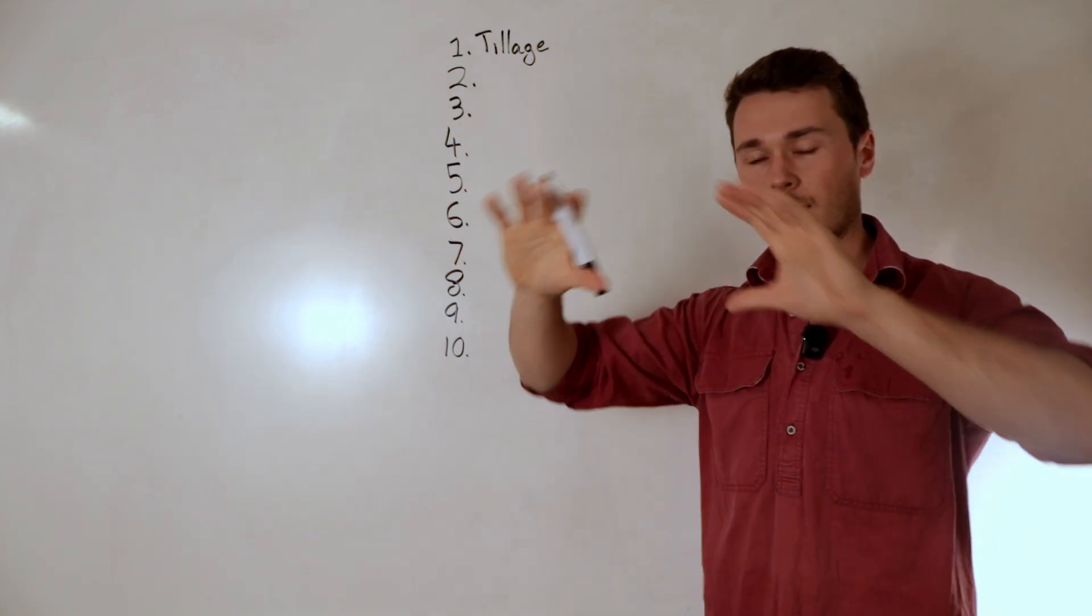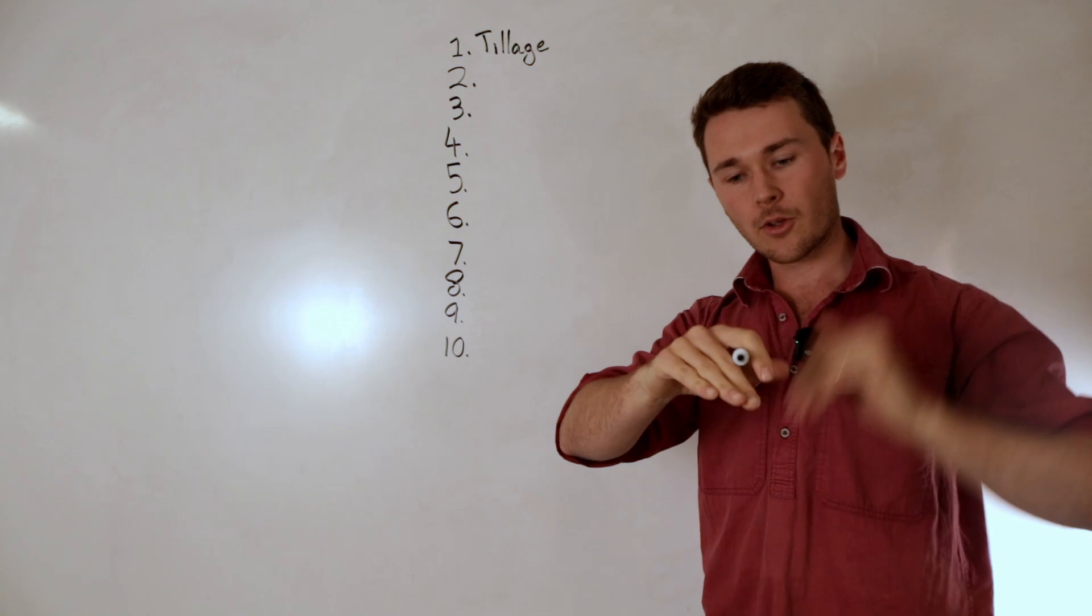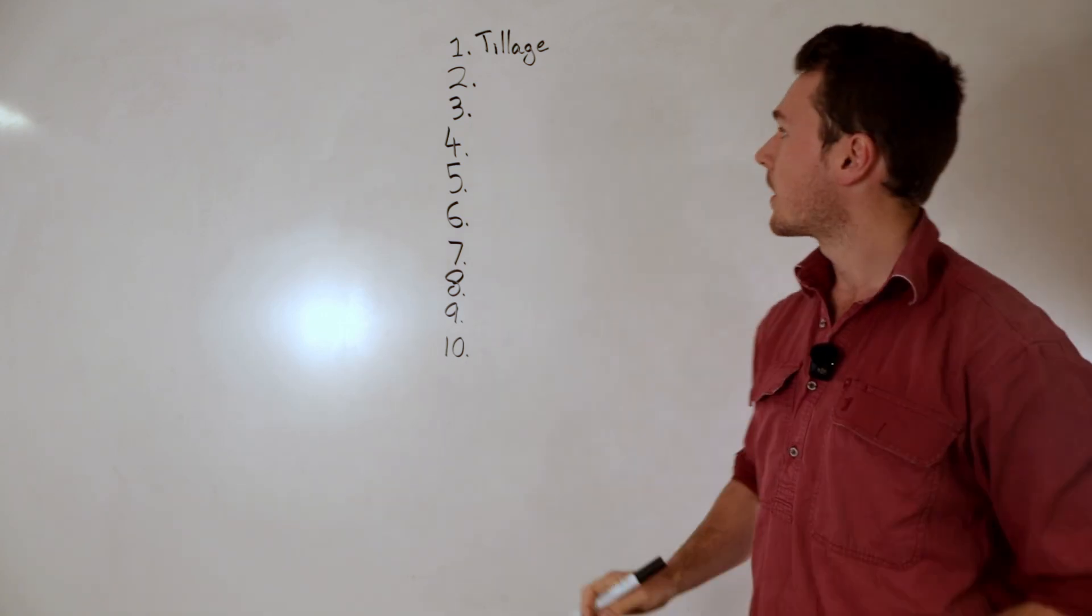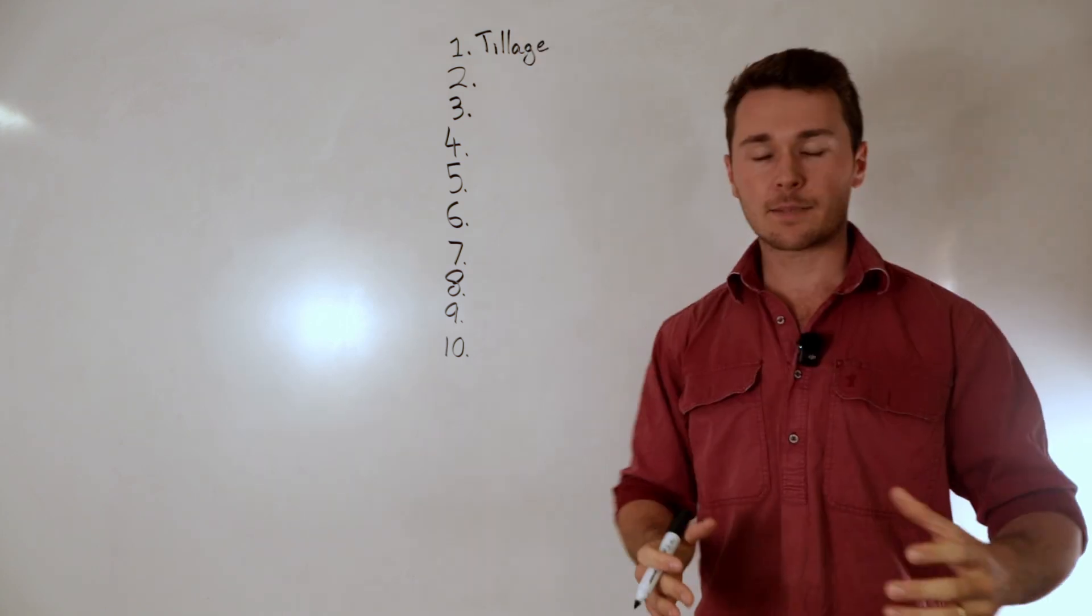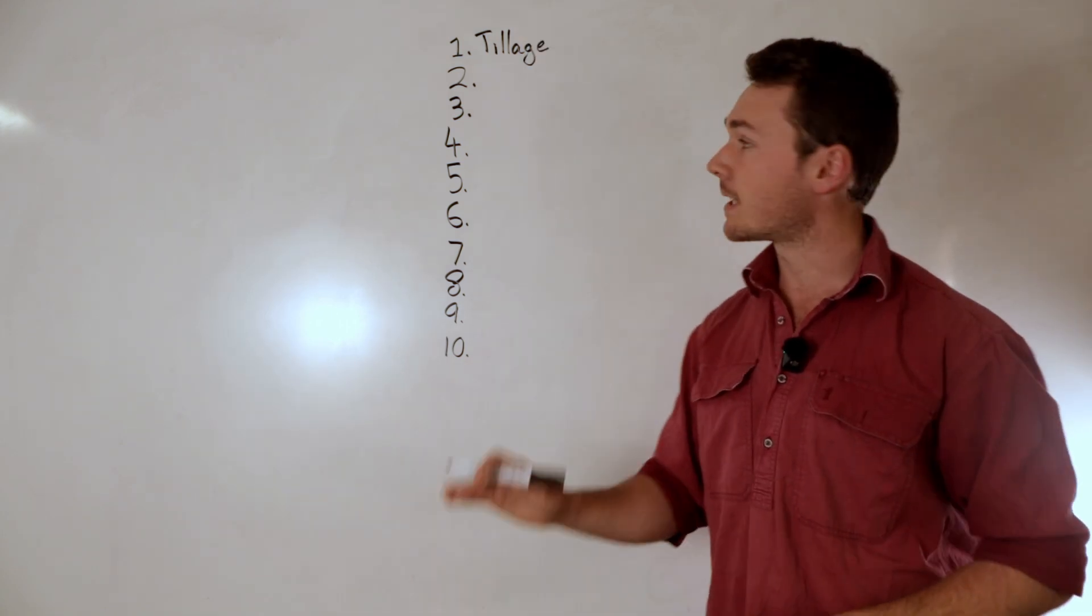And so a great way to start to destroy soils with lots and lots of tillage. We firstly destroy the structure where we till but then below that we actually also cause a compaction layer. So not only are we wrecking the topsoil, we're also compacting the subsoil.